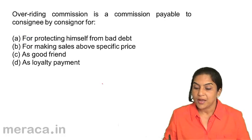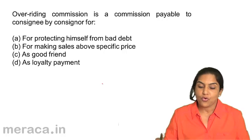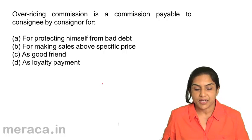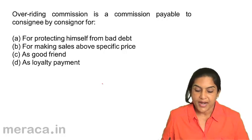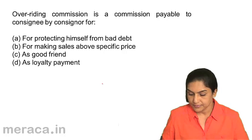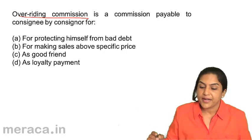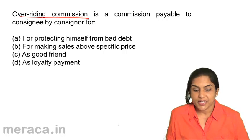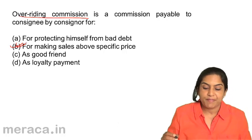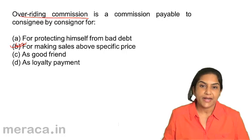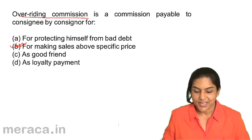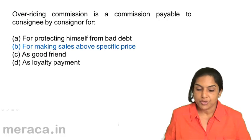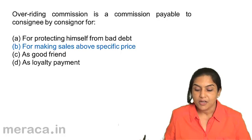Overriding commission is a commission payable to the consignee by the consigner for: A. Protecting himself from bad debt, B. For making sales, C. For making sales above a specific price, D. For making sales above a specific price. The correct answer is C: for making sales above a specific price.